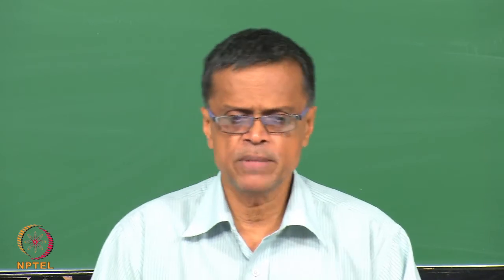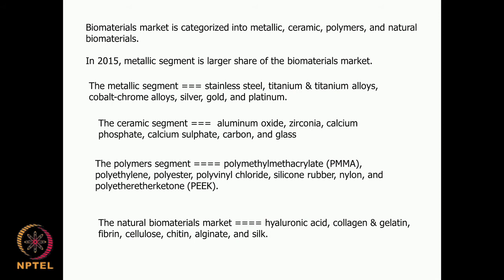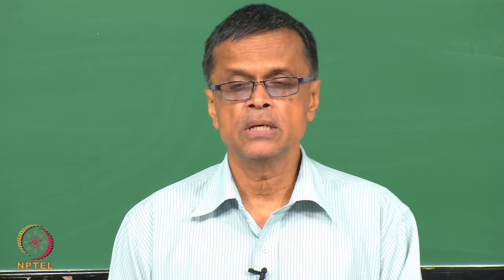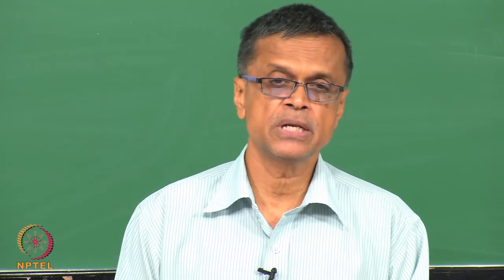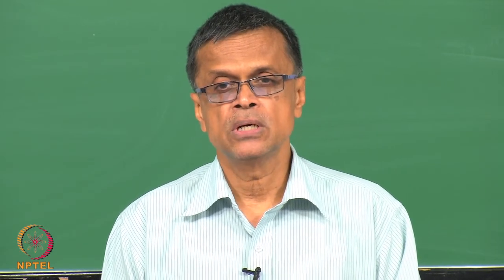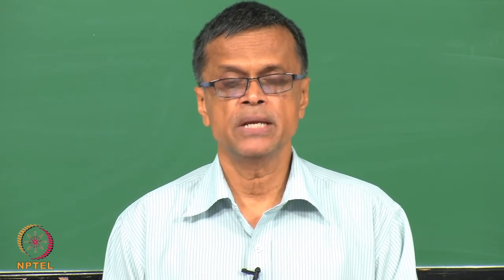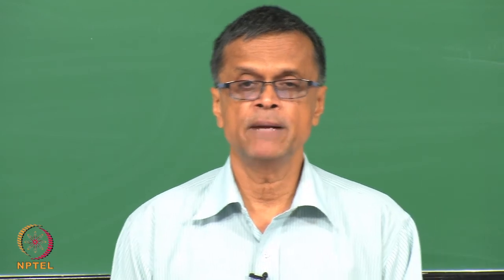The fourth type of biomaterial market is natural — materials produced by bacteria or cells, or found in plants, such as hyaluronic acid, collagen, gelatin, fibrin, cellulose, chitin, alginate, and silk. The beauty of these biomaterials is that they are very biocompatible and will not cause systemic problems, but they may have some disadvantages regarding strength, tensile strength, or flexural strength. Industries therefore prepare blends of natural and synthetic polymers to arrive at desired properties, while the natural polymers provide high biocompatibility.